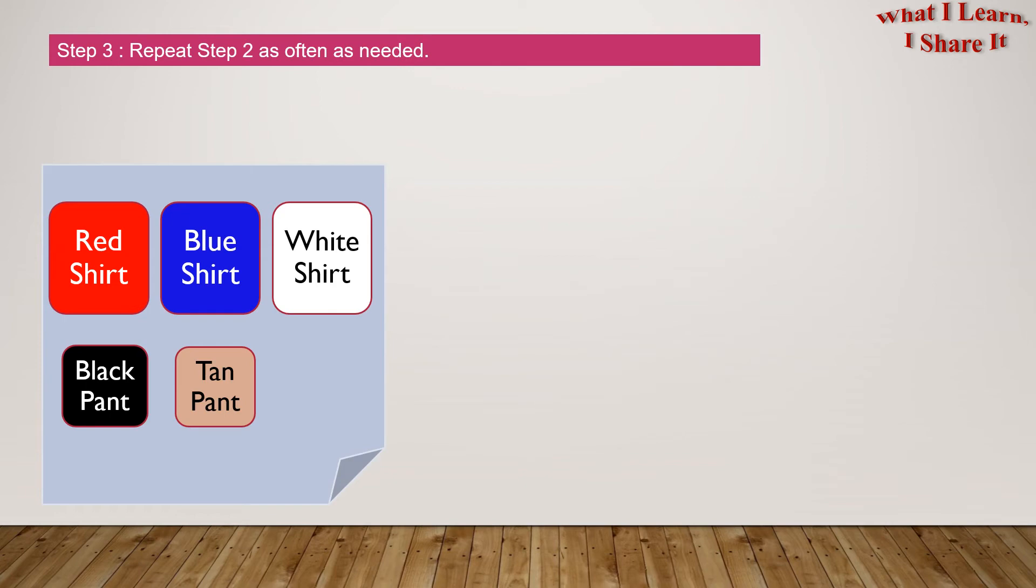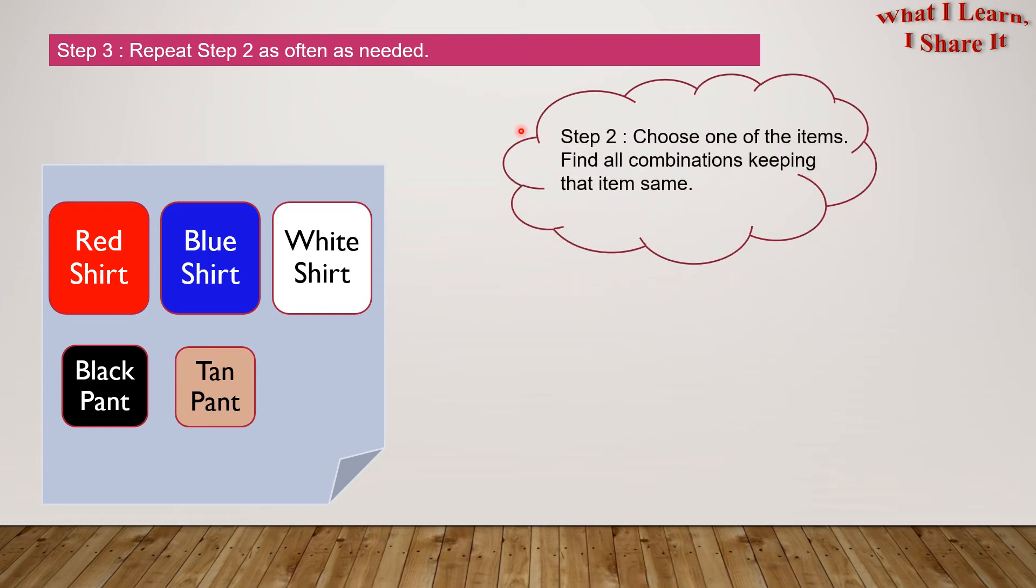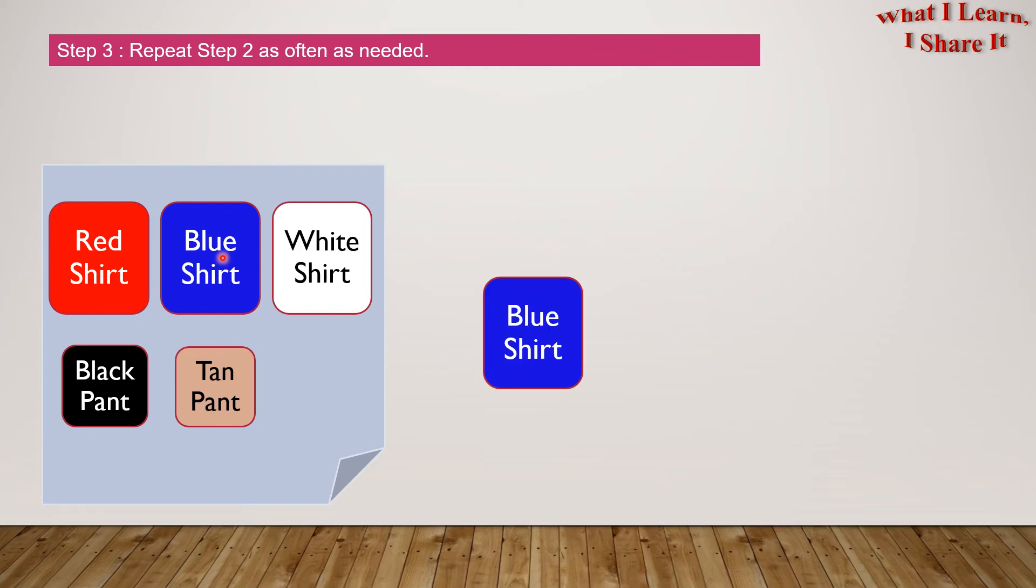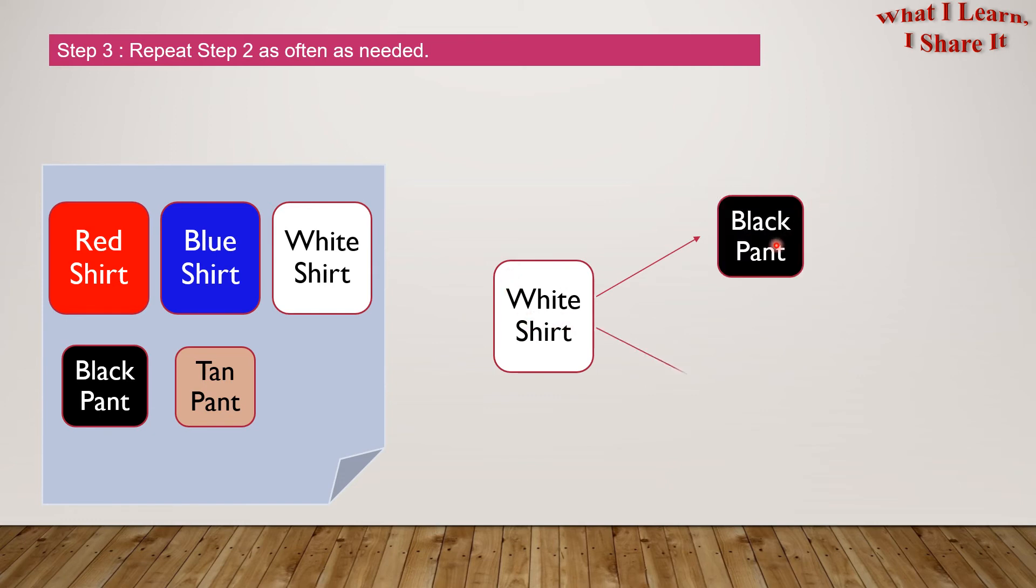Step 3: Repeat Step 2 as often as needed. So what is Step 2? Choose one of the items. Find all the combinations keeping that item same. So let's do Step 2 with the blue shirt and the white shirt. Blue shirt goes with the black pant and with the tan pant. The white shirt goes with the black pant and the tan pant.